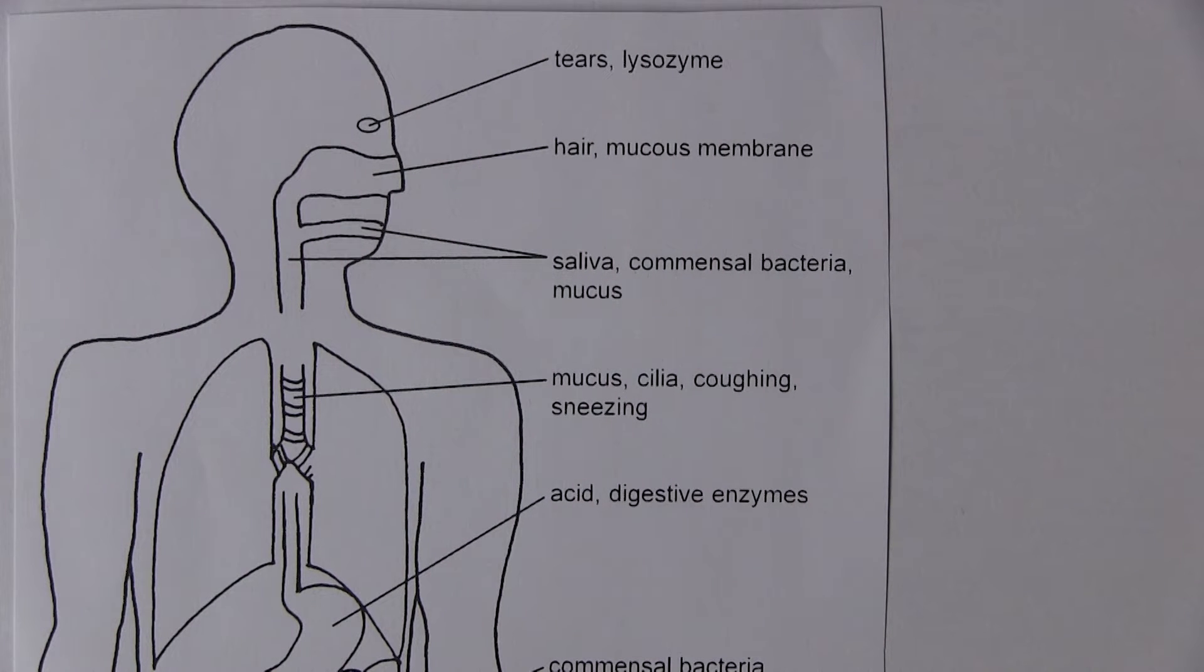Now in this video we're thinking about some of the innate mechanisms of immunity related to the normal anatomy and physiology of the body. So innate mechanisms, these are nonspecific. They will act against a wide variety of potentially infecting organisms.